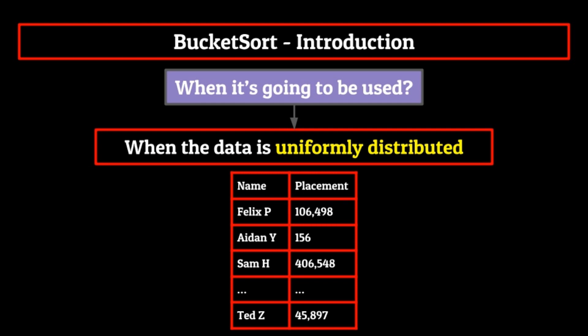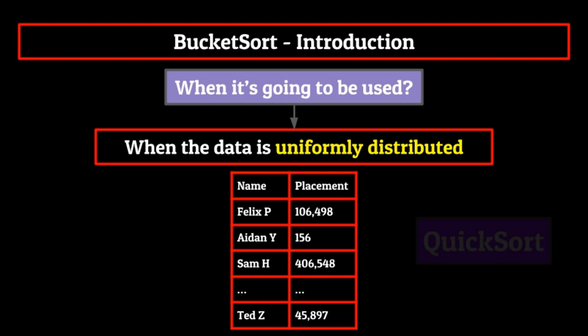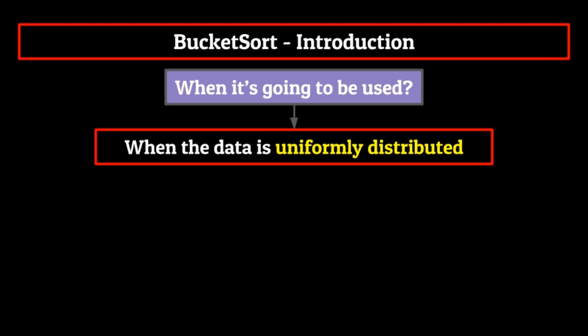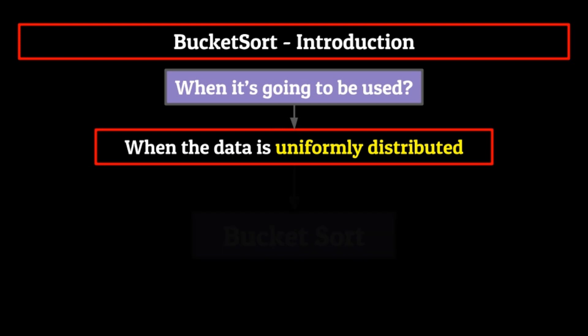How would we go about sorting this? You might be thinking that you should just use old reliable and go with quick sort, merge sort, or heap sort. But there's something special about this data set that we can use to our advantage, and the way that we do this is through bucket sort.